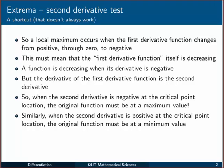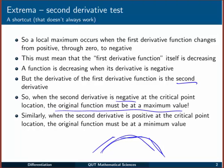A local maximum occurs when the first derivative function changes from positive to zero to negative. This must mean that the first derivative function itself is decreasing. A function is decreasing when its derivative is negative. But the derivative of the first derivative function is the second derivative. So when the second derivative is negative at the critical point location, the original function must be at a maximum value.